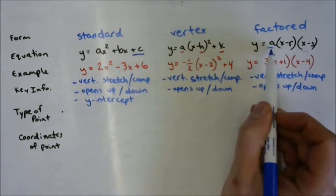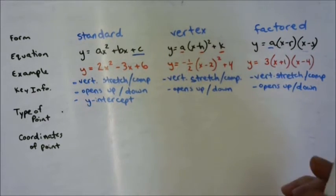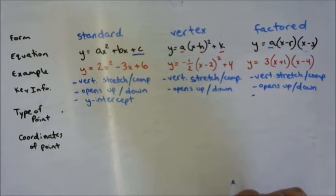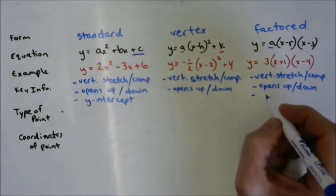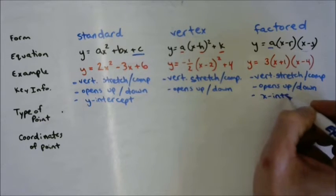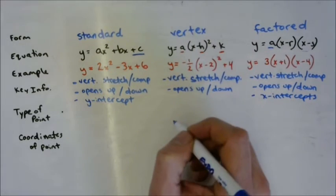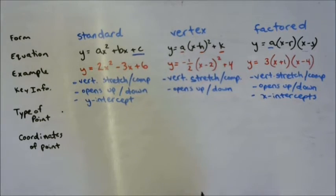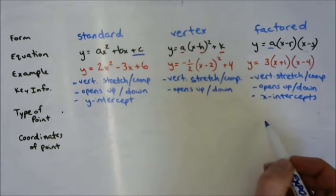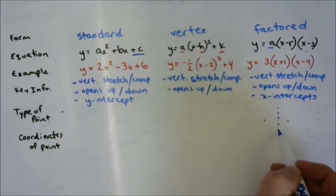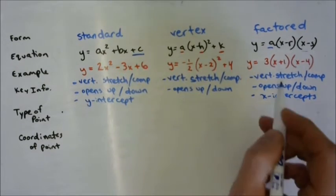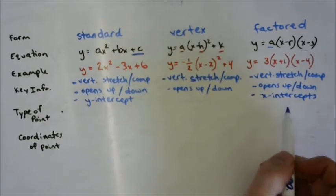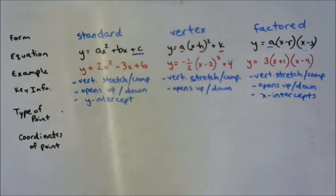Let's skip over to factored form. It has an a in it, but it also has these two factors. What do they tell us? They give you the x-intercepts. You can also then get the vertex from that — if you know the two x-intercepts, the x-coordinate of the vertex is right in between them because the parabola is symmetrical. Then to find y, you'd substitute back in. But that doesn't come directly from the equation.